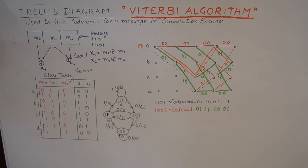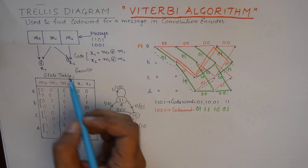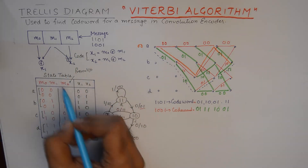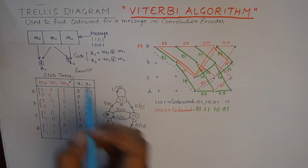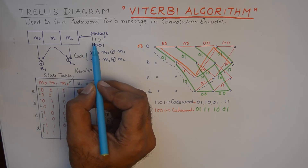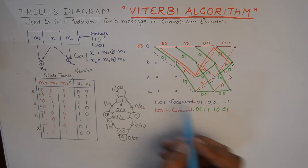If you have watched the previous video and have understood the trellis diagram well, then you can proceed to watch this video. This slide is from my previous video where a convolution encoder was designed and its trellis diagram was made. The code words were generated for the messages 1101 and 1001 like this.